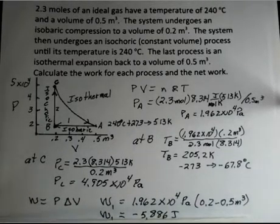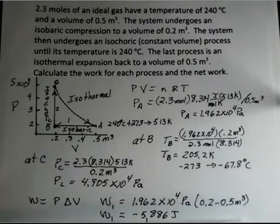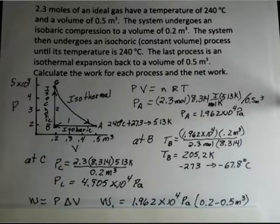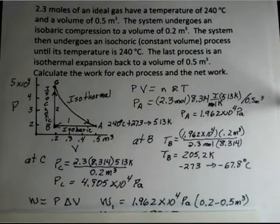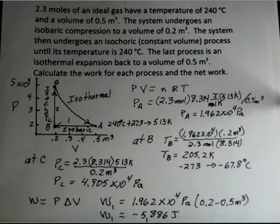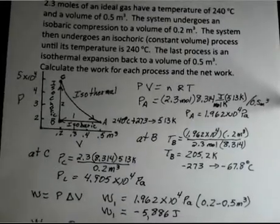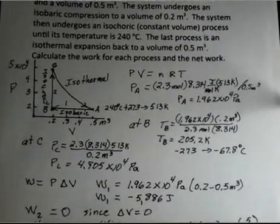So, work. On this isobaric path, where the pressure is constant, we can calculate work. Work with pressure is the work is the pressure times the change in volume. So we have work on path number one, the pressure and the volume changes. The final volume is 0.2 and then we subtract the initial volume, 0.5. And I came up with minus 5,886 joules. Why is it negative? The gas is being compressed. The gas is not expanding and doing work. Instead, work was done on the gas. So that's a negative number.